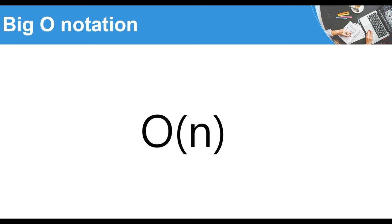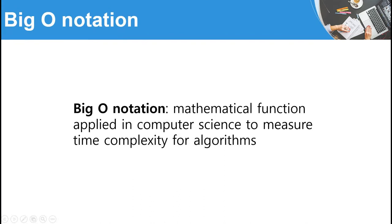Algorithm complexities are classified by the function appearing in the Big O notation. Big O notation is a fundamental topic in computer science for measuring how algorithms generally perform. There are many possible ways to define time complexity in Big O notation, but I'll focus on three that are really important at the beginner level. The Big O notation is the method used to define time complexity of an algorithm in computer science.